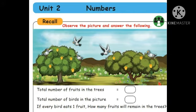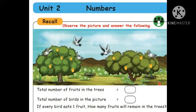The second question: total number of birds in the picture. How many birds are there in the two trees? One, two, three, four and five. If every bird eats one fruit, how many fruits will remain in the trees? There are only five birds, and each will eat one fruit. So five birds will eat five fruits. Remaining fruits — four fruits will be there in the tree. You have to draw four fruits and write the answer number four in the box.